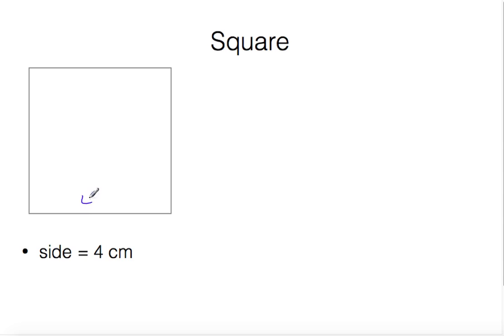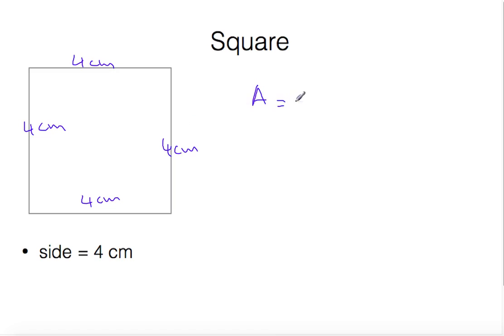The next example is a square. One side is four centimeters, and since it is a square, each side equals four centimeters. The area of the square is side squared — four centimeters squared — which gives an area of 16 centimeters squared.